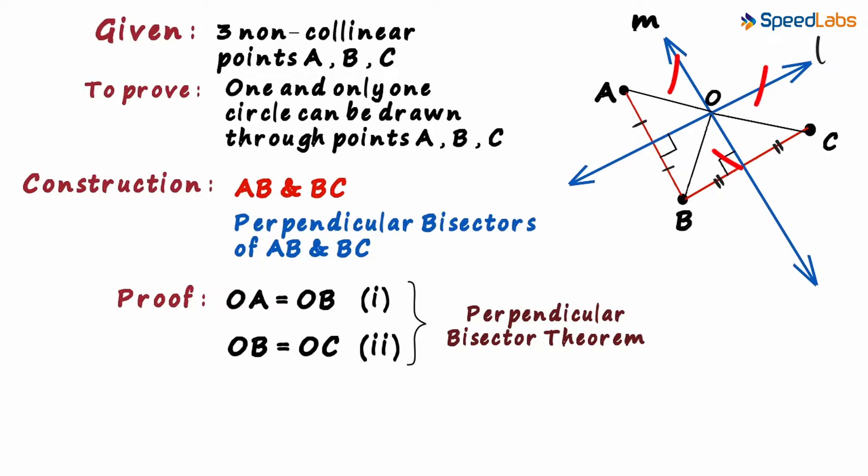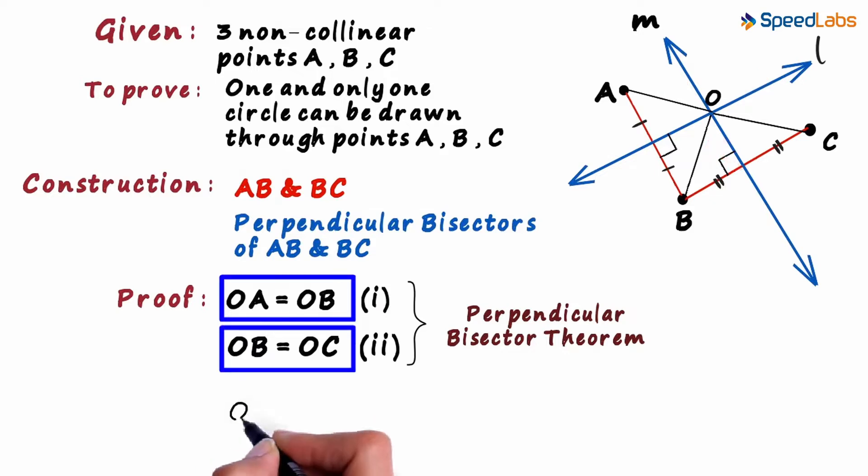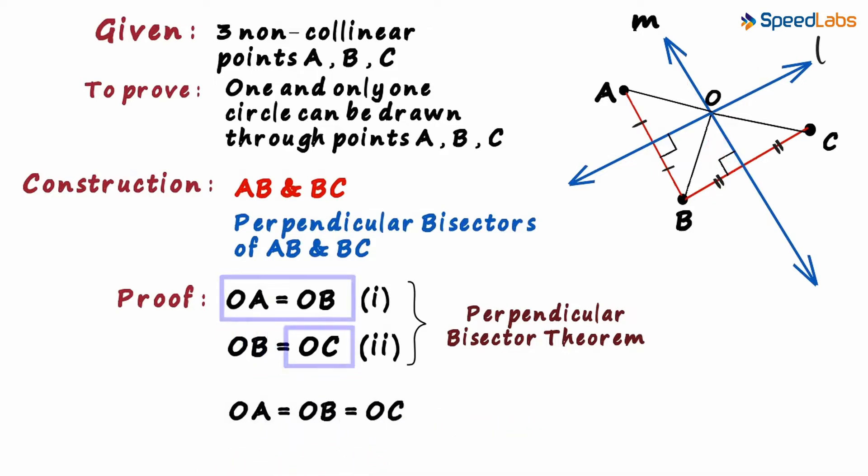Yes, all three are equal to each other. From equations 1 and 2, we can say that OA is equal to OB is equal to OC. That's exactly what we wanted. Let them be equal to the radius R.